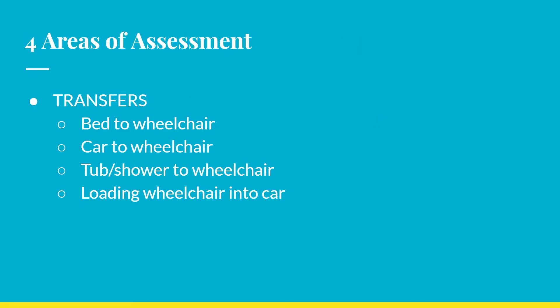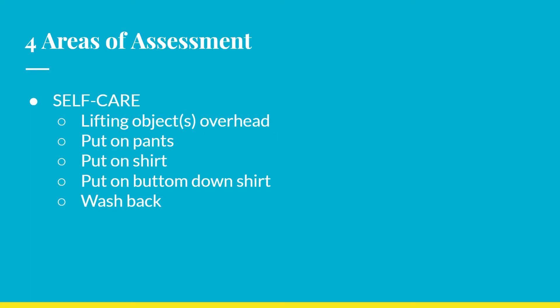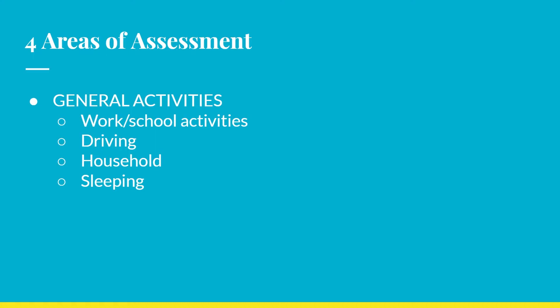The first area consists of transfers with four items: transferring from a bed to a wheelchair, from a car to a wheelchair, from the tub or shower to a wheelchair, and loading a wheelchair into a car. The second area covers wheelchair mobility: shoulder pain after using a wheelchair for greater than 10-minute bouts and while navigating ramps. The third area focuses on self-care: lifting objects overhead, putting on pants, a shirt, a button-down shirt, and washing one's back. The fourth area covers general activities: school or work, driving, household chores, and sleeping.